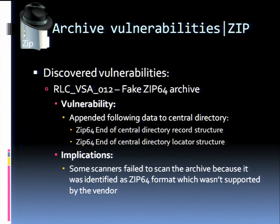Another unusual format example involves adding fields to the zip archive that made it look like zip64, but no archive processor recognized it as zip64 — they processed it normally. This was an error related to identifying the file format itself.